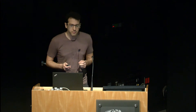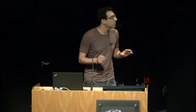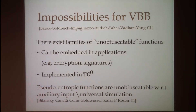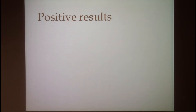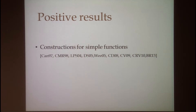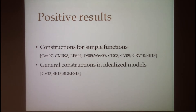Things are even worse for auxiliary input obfuscation, where we believe that all pseudo-entropic functions are unobfuscatable, and these already include many of the cryptographic functionalities that we want to obfuscate. We also have some limited positive results for VBB obfuscation — we know how to obfuscate very simple functions such as point functions and their extensions, and we also have constructions of VBB for all functions in idealized models.